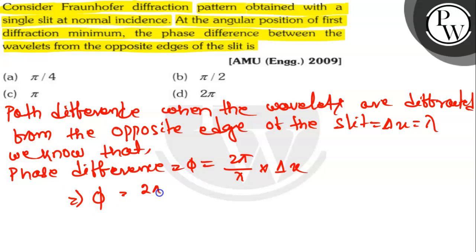is equals to 2π by λ into λ. So here path difference is λ, so it will be φ equals 2π. Here λ and λ cancel. So option D is the correct answer. Thank you.